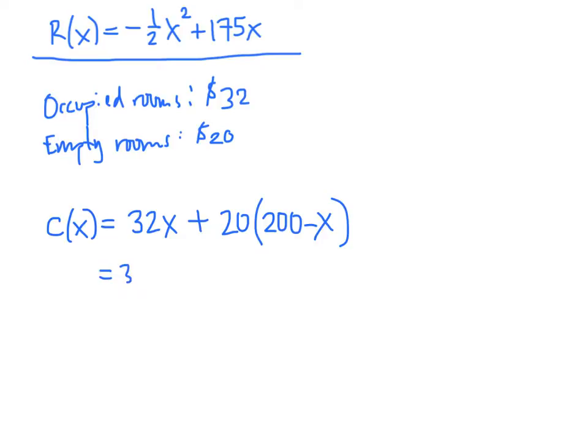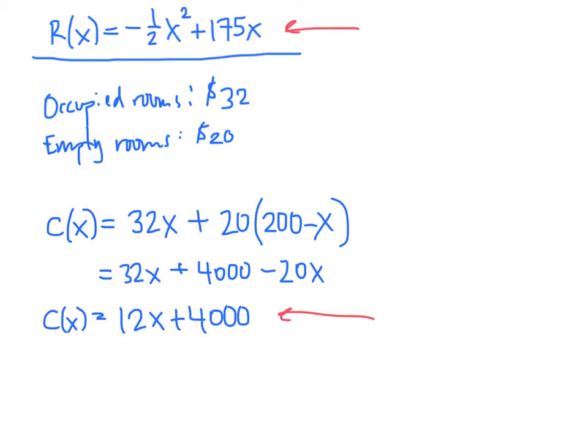Let's work this out, 32X plus, that's 40,000, 4,000, sorry, minus 20X. And that gives us 12X plus 4,000. All right, so now we have a revenue formula. That's up here. And we have a cost formula down here. That's our C of X. And so finally we're ready to find our profit formula.